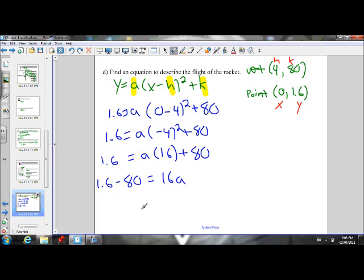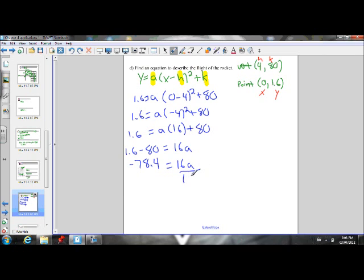Instead of A times 16, I'm going to write it as 16 times A, because the order of multiplication doesn't matter. And we're more familiar seeing it this way. So I have negative 78.4 equals 16A. Get A by itself, divide everything by 16. If I do that, I should get an A value, I believe, of about negative 4.9.